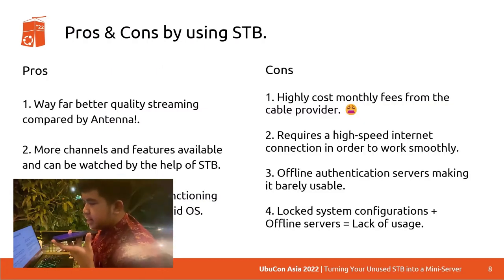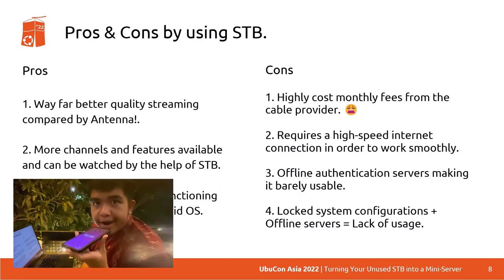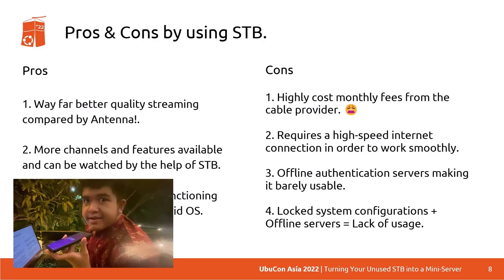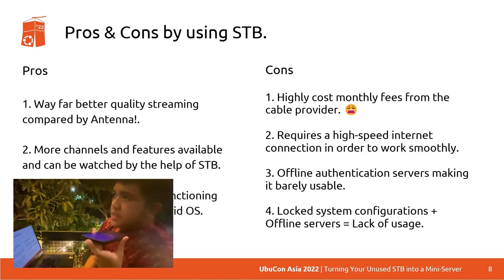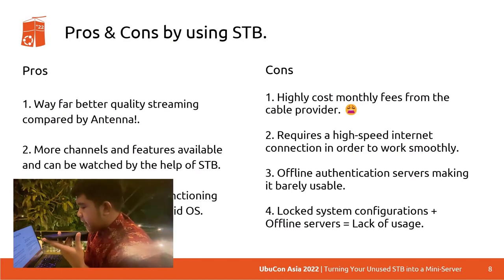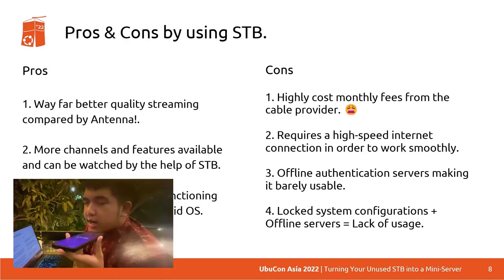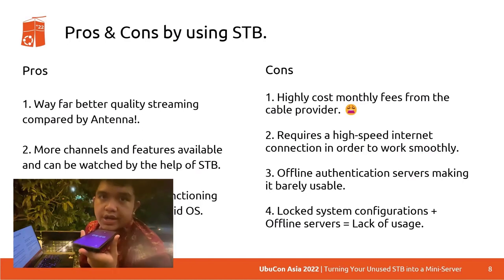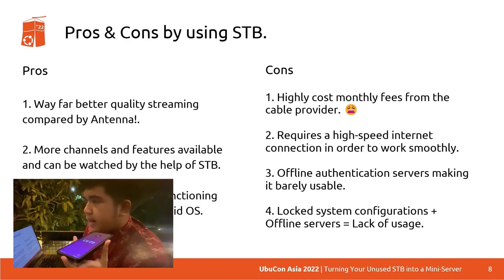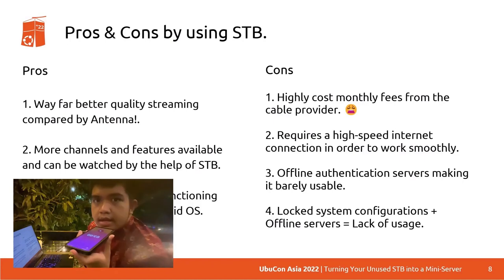The pros of using an STB: first, way better quality streaming compared to an antenna. You know that TV static back in the day? By using an STB, it rarely happens, and if it does, it doesn't really interrupt the entire signal. Second, more channels and features are available. For example, as an Indonesian, I can watch BBC News — something not normally accessible via an analog system. STBs have a lot of channels, and in certain STBs you can even add your own playlist. Third, it turns your old TV into a functioning smart TV running Android OS.